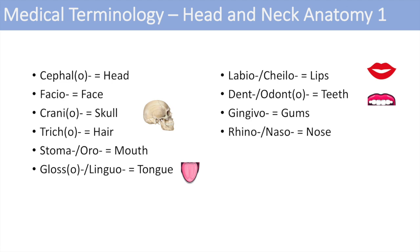The next one is rhino or naso, which denotes the nose. So rhinitis is inflammation of the nose when you get a cold — viral rhinitis. They all denote a condition involving the nose. The next one is buccal, meaning cheek. If you take a buccal swab, you collect a cell sample from the inside of the cheek — a buccal sample.